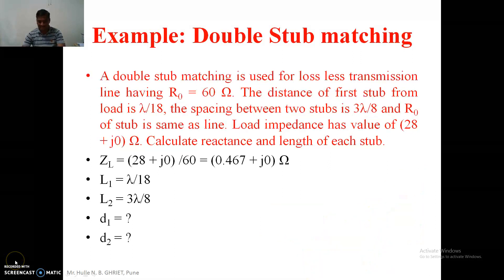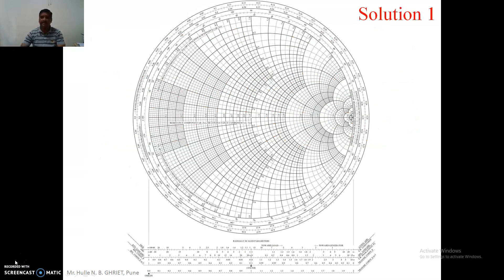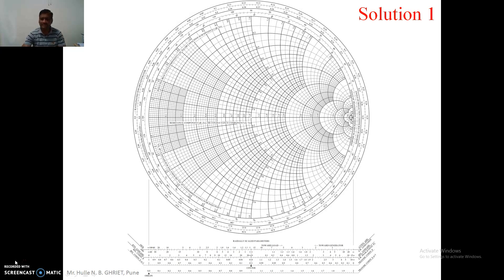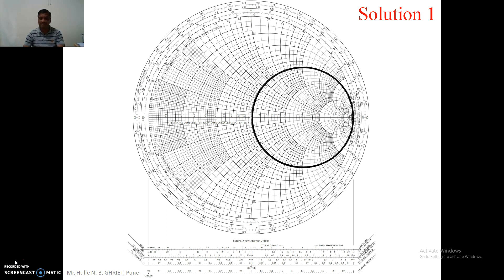This example has 4 solutions in total. I will find only two solutions — solution number 1 and solution number 2 — and give hints or tricks for the remaining two solutions. All four solutions are correct, but we have to check the feasibility of the other two. In this case I will start with stub number 2.